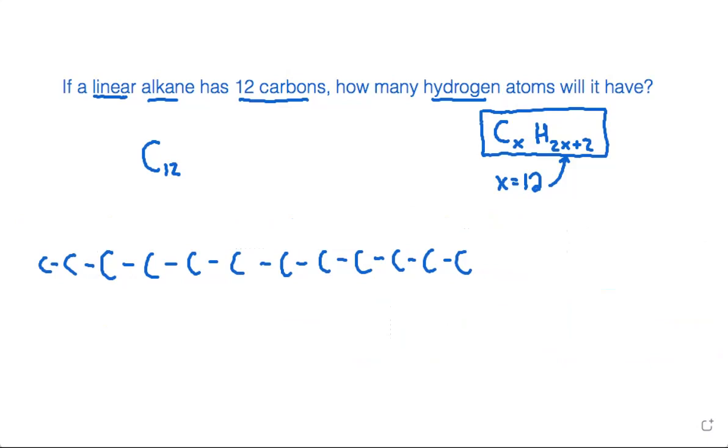So once we draw our linear alkane, our carbons in a straight line, what we need to do to figure out the number of hydrogens is around every carbon, every carbon should have four total bonds.